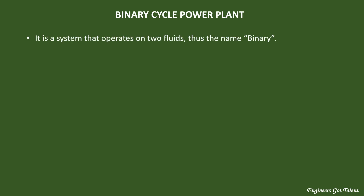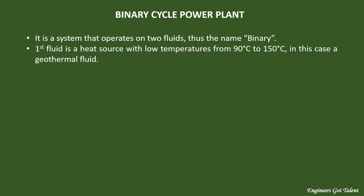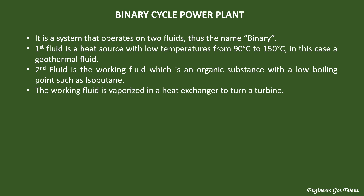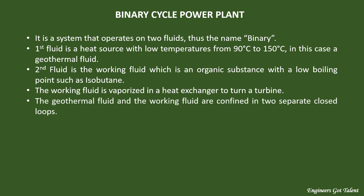The Binary Cycle Power Plant System is a system that operates on two fluids, thus the name Binary. The first fluid is a heat source with low temperatures from 90 to 150 degrees Celsius — in this case, a geothermal fluid. The second fluid is the working fluid, which is an organic substance with a low boiling point, such as isobutane. The working fluid is vaporized in a heat exchanger to turn a turbine. The geothermal fluid and the working fluid are confined in two separate closed loops.